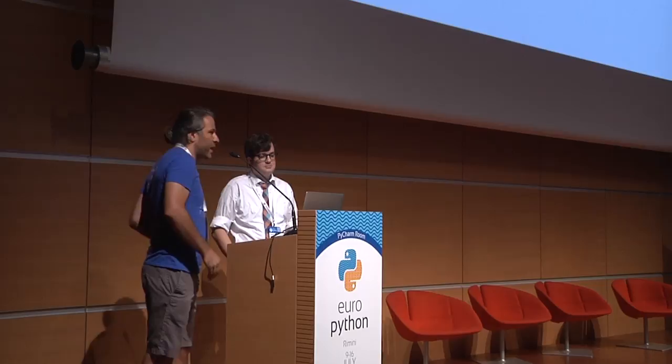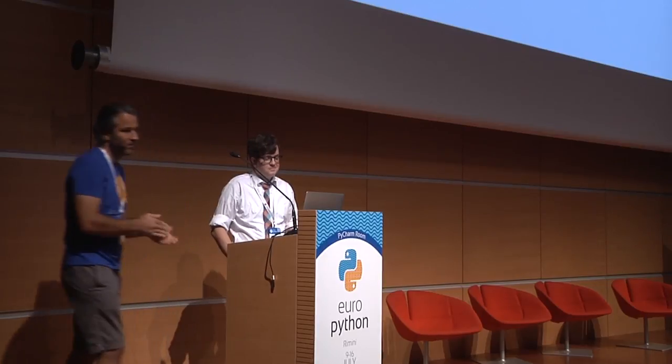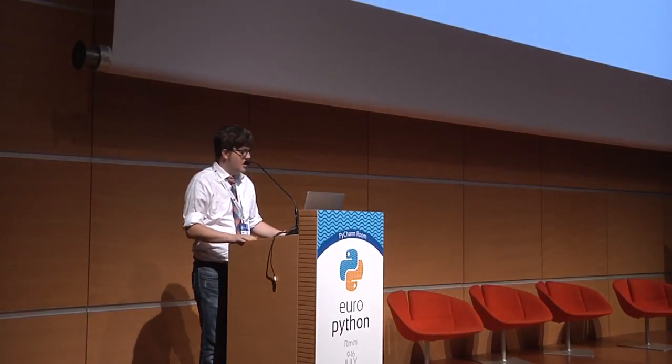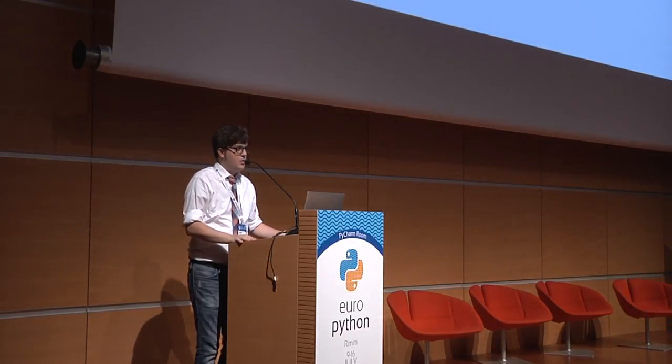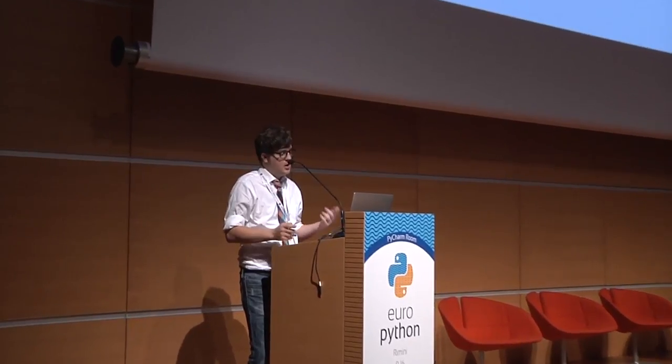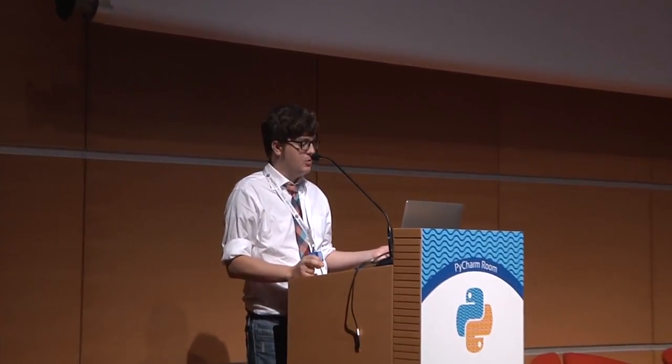Let's give a warm welcome to Frankie. I'm the lead platform developer for theatlantic.com, the eponymous website for a 160-year-old politics and culture magazine headquartered in Washington, D.C. Today I'm going to be talking about how to manipulate the internals of CPython so that you can make the interpreter evaluate 2 plus 2 to equal 5.